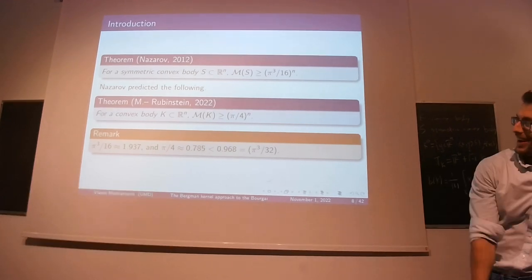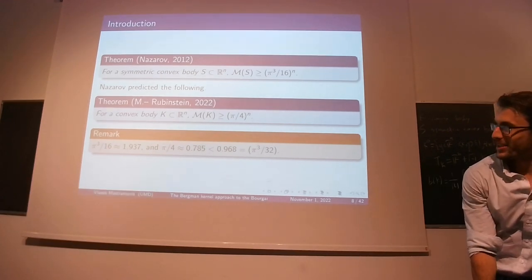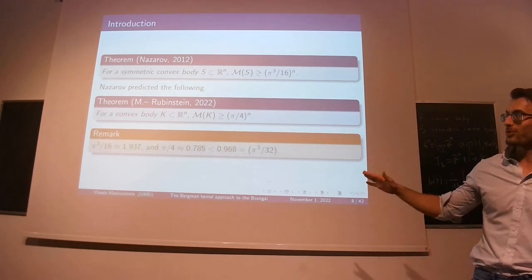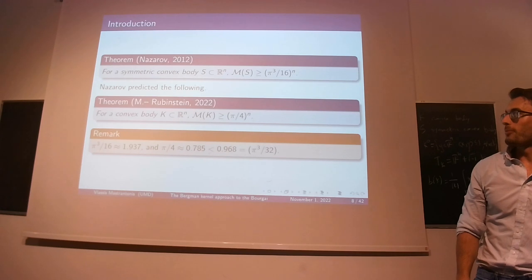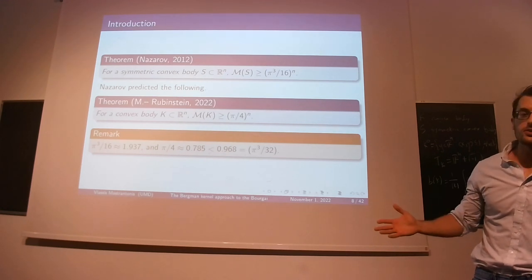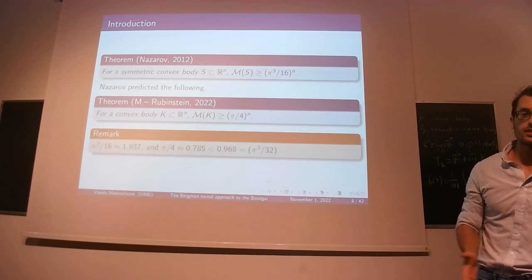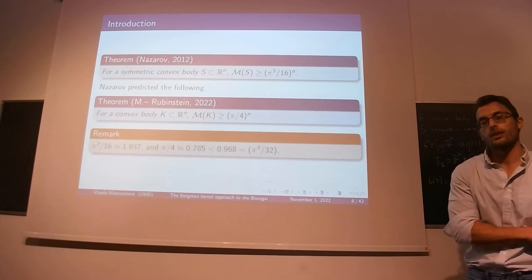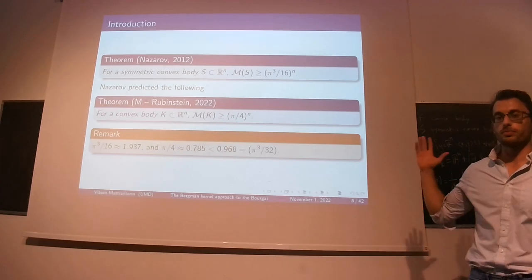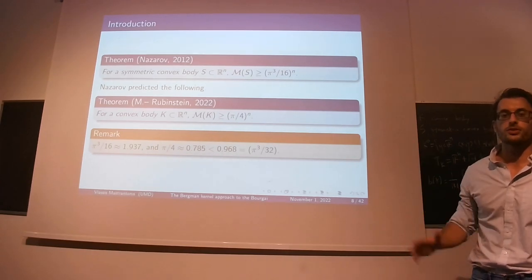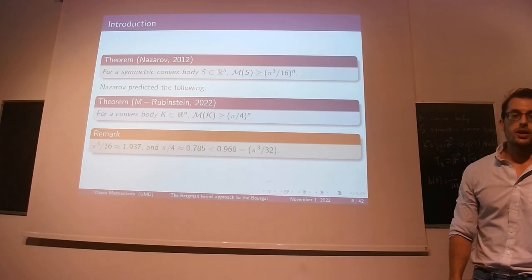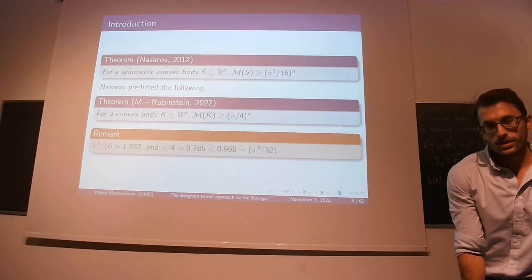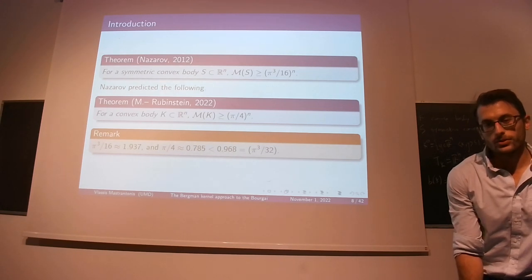From the final lines of his paper, Nazarov predicts that the same proof would work for any convex body, without using the symmetrization trick. Someone would be able to carry out all the details in a similar manner and get the bound pi over 4, which is not as good as what one would get from the symmetrization trick, but it's still interesting to do.